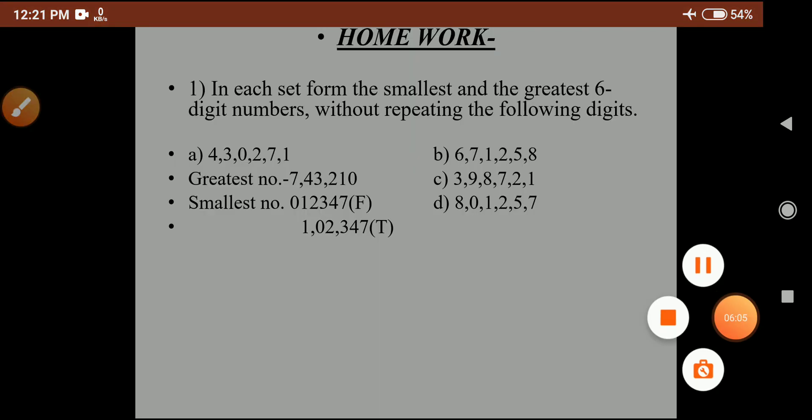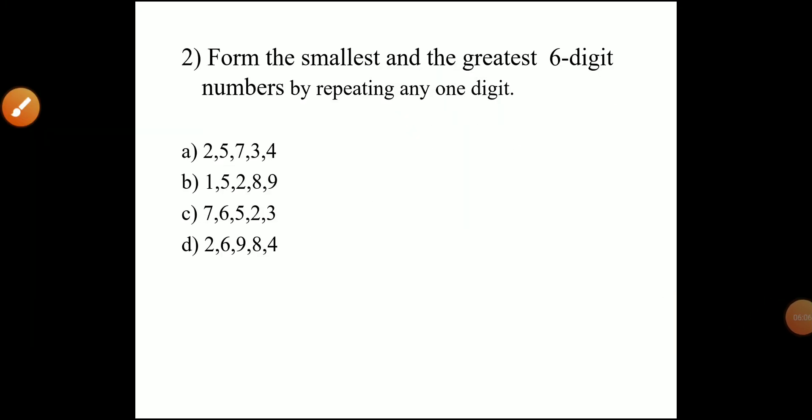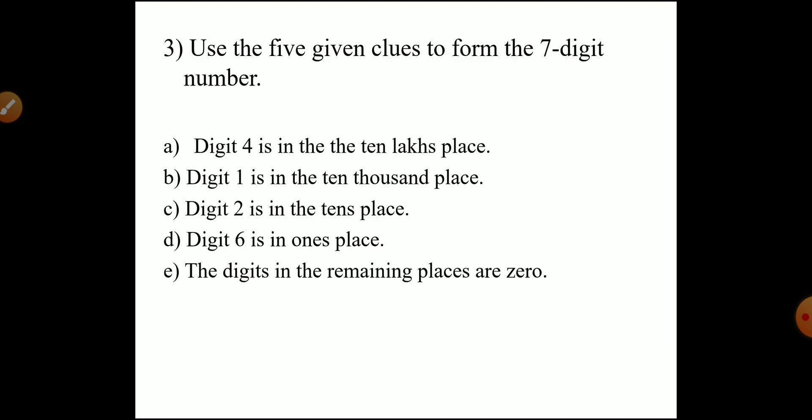Question 2: Form the smallest and greatest six-digit number by repeating any one of the digits. For the greatest number, repeat the largest digit one extra time. For the smallest number, repeat the smallest digit one extra time.